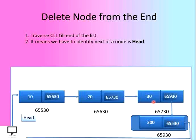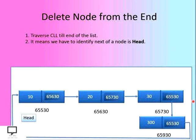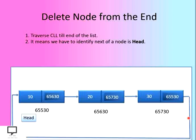After traversal, we delete this last node. We maintain previous and current pointers, just as in the in-between deletion example. With the previous pointer at the second-to-last position, we update its next field with the address of the head node. This removes the link to the last node, and after deleting it we update the circular link from the previous node to the head node, indicating it is still a circular linked list.